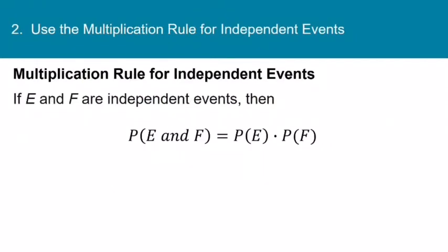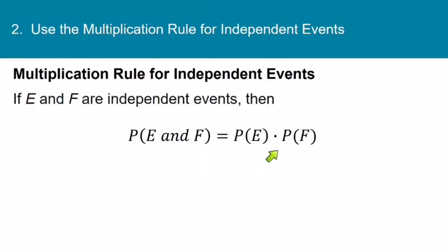Here is the multiplication rule for independent events. If E and F are independent events, then the probability of E and F is equal to the probability of E times the probability of F.